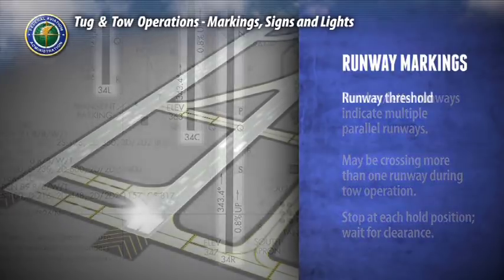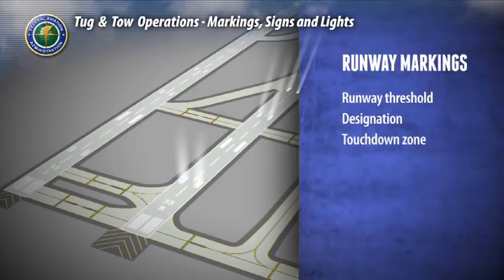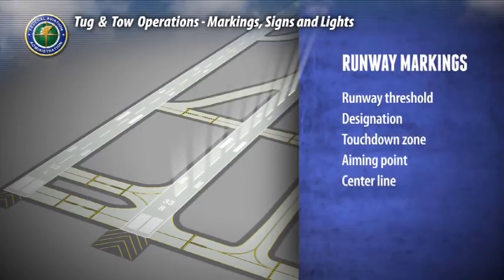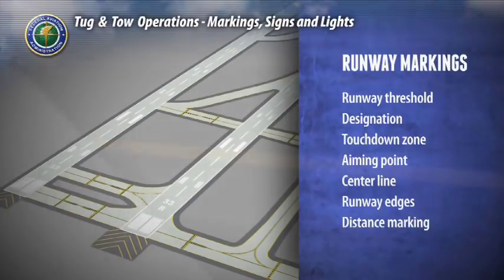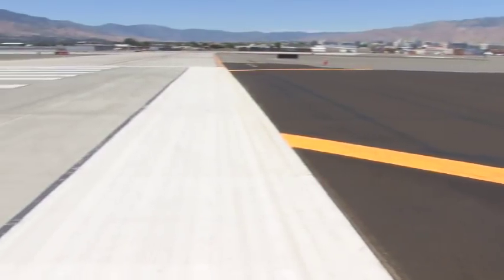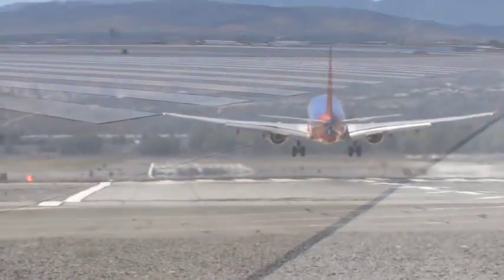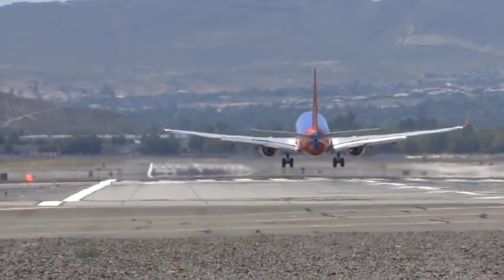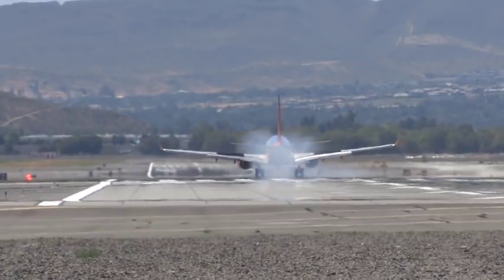Runway markings include runway threshold, designation, touchdown zone, aiming point, center line, runway edges, and distance markings. With the exception of runway designation markings, most likely you will not encounter the majority of these markings as they are intended to help pilots land their aircraft.